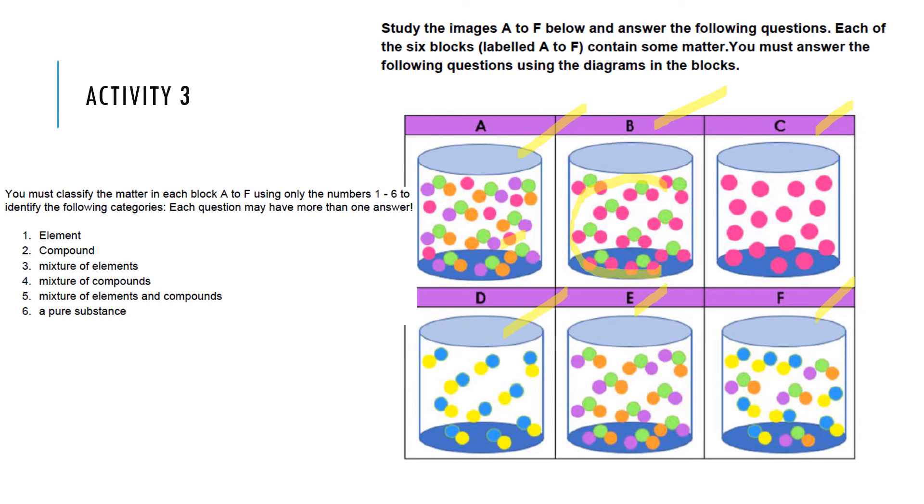Instructions: You must classify the matter in each block A to F using only numbers 1 to 6. Use only 1, 2, 3, 4, 5, 6 to identify the following categories. Each question may have more than one answer. For example, letter F, I think F is 1, it could be 1, it could be 6, it could be 5. For example, letter C, I think letter C is element number 1, 2. That's what you'll do. This activity is very easy. I hope you understand. Thank you and God bless.